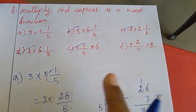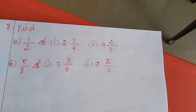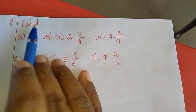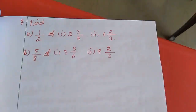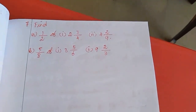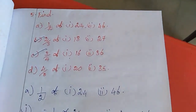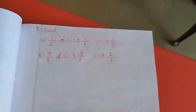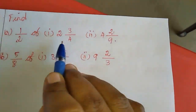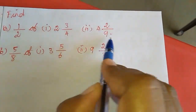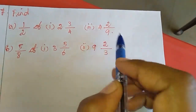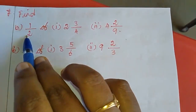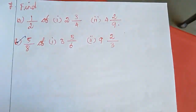Now I will move to the 7th sum. The 7th sum says find — this is like the 5th sum, but here they gave mixed fractions. The first sum is homework for you because it is very easy. I will do the second sum.